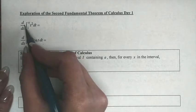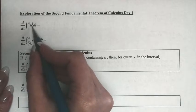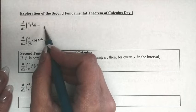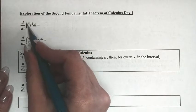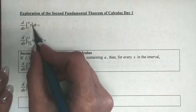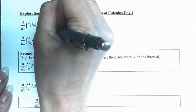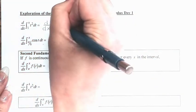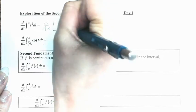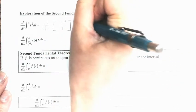We have the derivative with respect to x of the integral from 1 to x of t squared dt — what is that equal to? The first thing we need to do is integrate the inside, meaning the t squared dt. So we have the derivative with respect to x of t cubed divided by 3, evaluated from 1 to x.